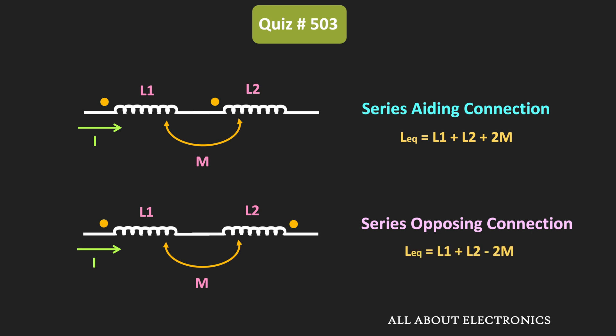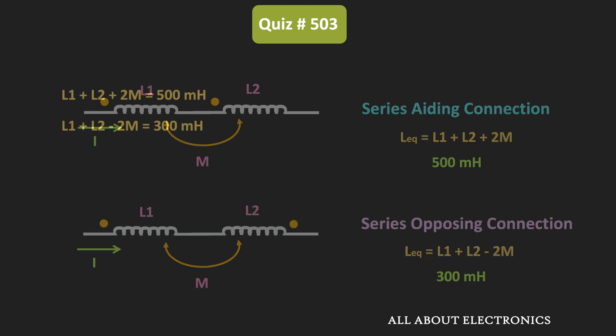From the problem, when the two coils are connected in series adding, the total inductance is 500 mH. And when connected in series opposing, the equivalent inductance is 300 mH. So we can write: L1 + L2 + 2M = 500 mH, and L1 + L2 − 2M = 300 mH.